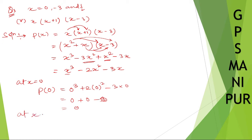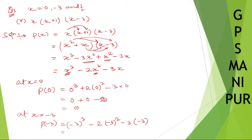At x equal to minus 3, P of minus 3: instead of x, we are putting minus 3. So minus 3 whole cube, minus 2 into minus 3 whole square, minus 3 into minus 3. 3 threes are 9, 9 threes are 27 — so minus 27. Minus 2 into 9 is minus 18. Minus into minus gives plus, 3 threes are 9.